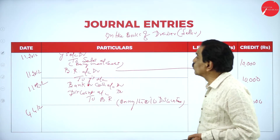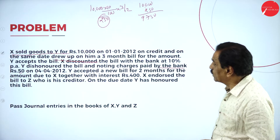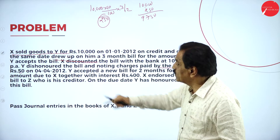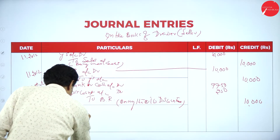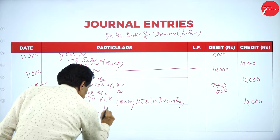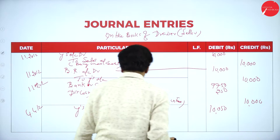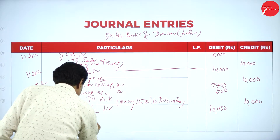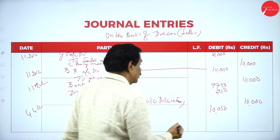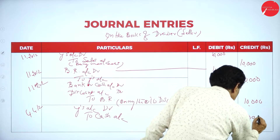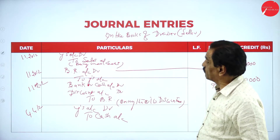Bill dishonored. Who meets the bill? X meets the bill on behalf of Y. How much he has to pay? 10,000 and noting charges is 50. So Y's account debit — dishonor the bill — 10,050. To cash account, he pays 10,050 with noting charges. So Y becomes the debtor to the extent of 10,050.